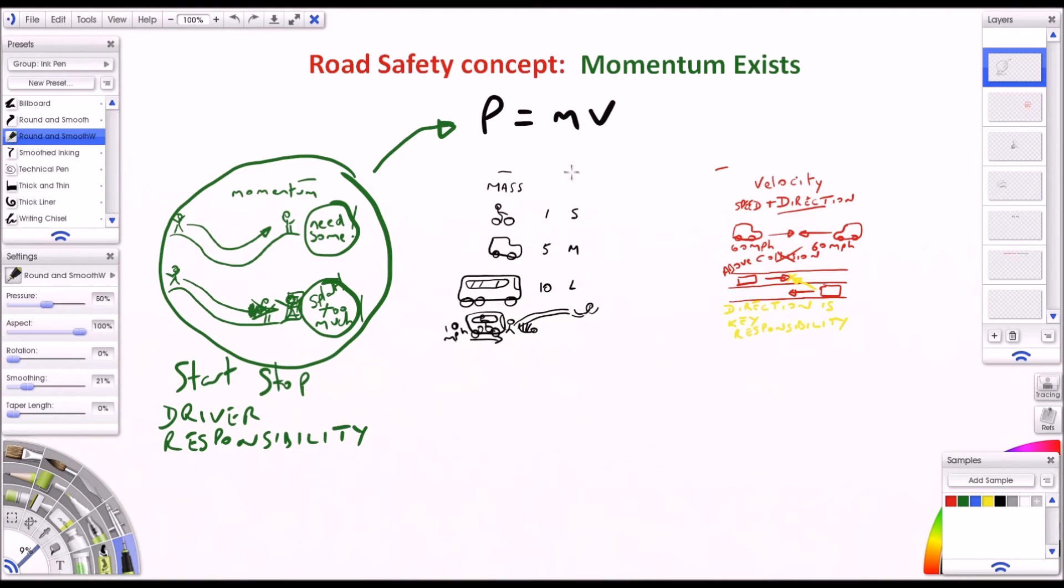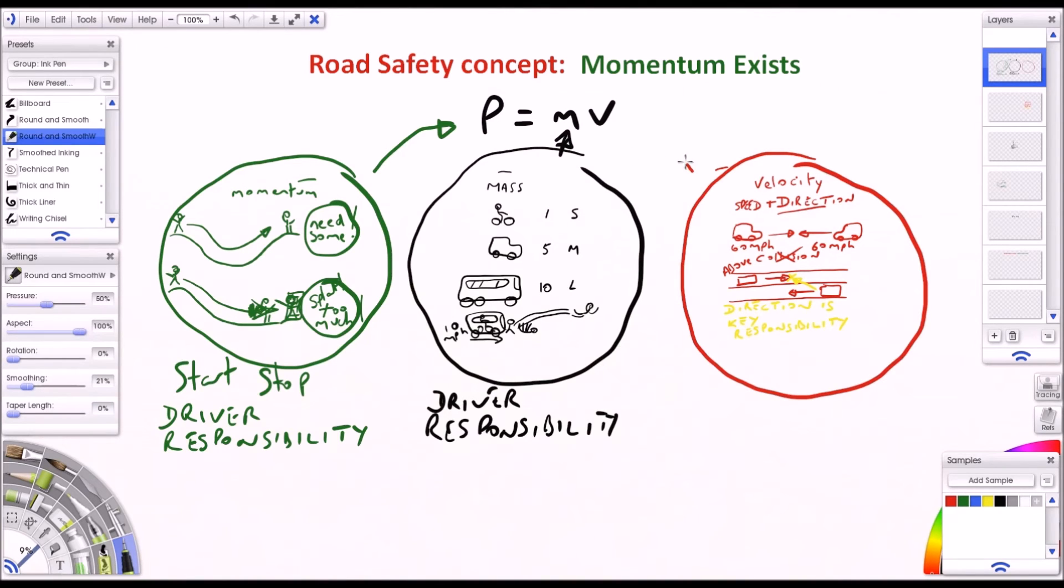The mass is not just a vehicle, it's people and a vehicle, driver responsibility. Velocity, velocity is the two things: speed and direction, and both are key for road safety, driver responsibility.